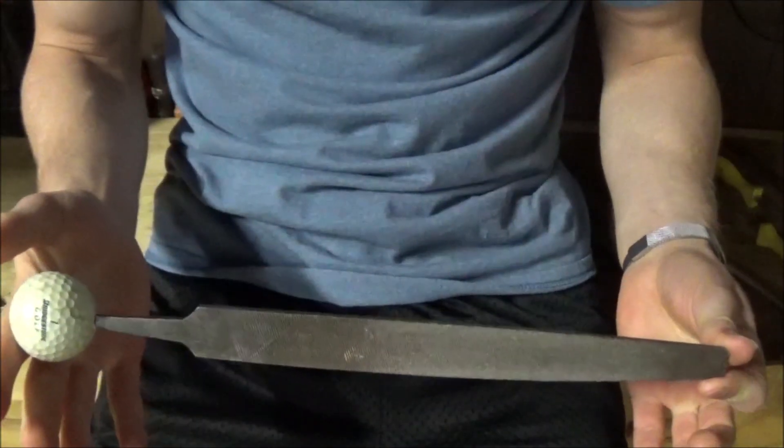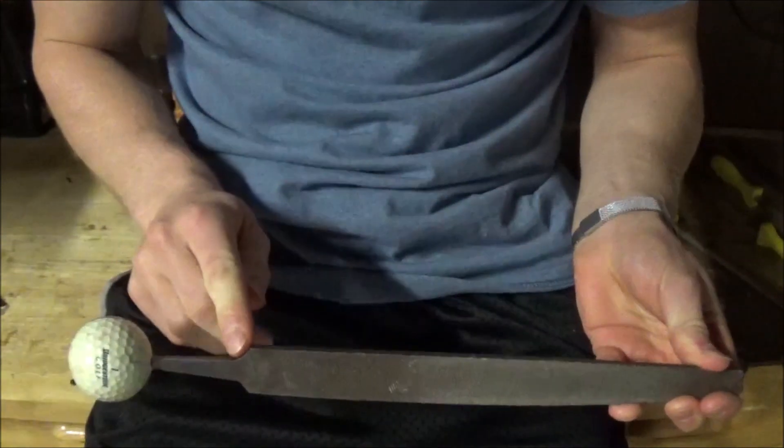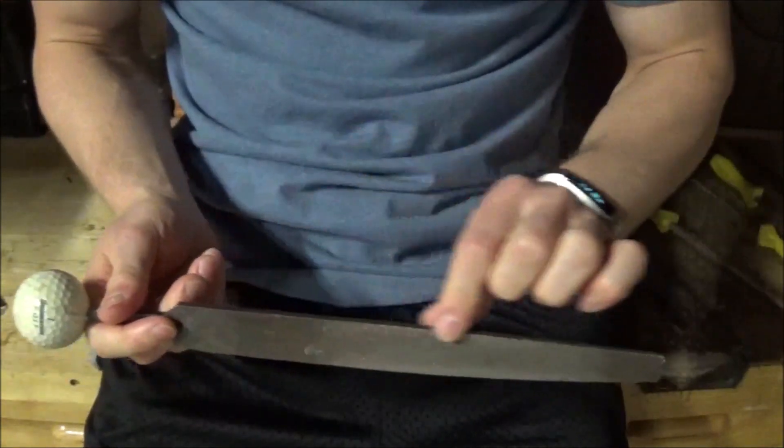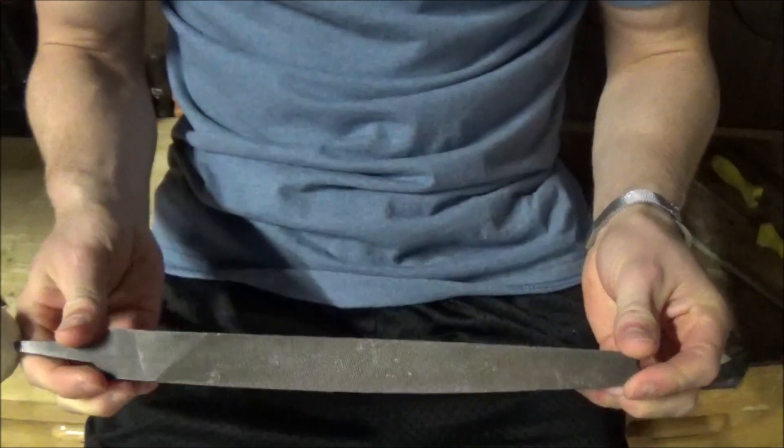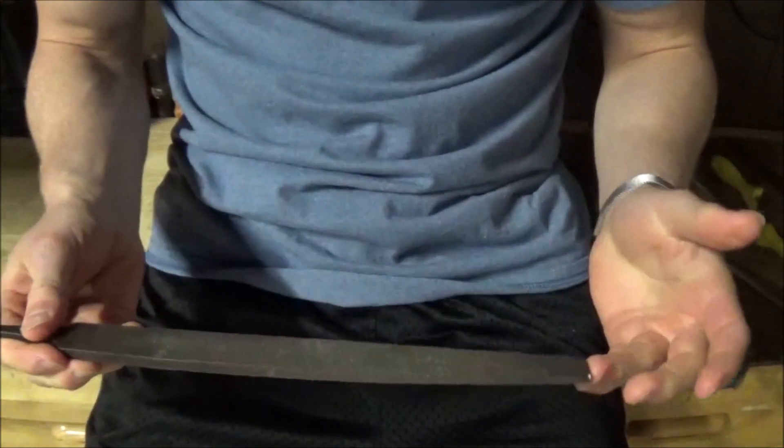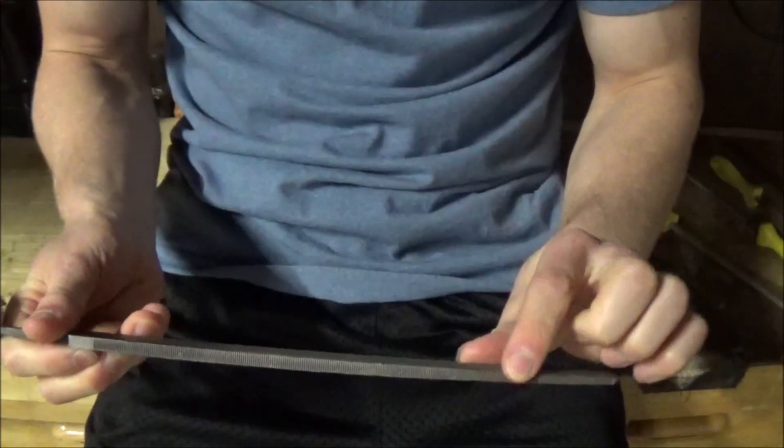There aren't a whole lot of parts to a file. You have the tang, which is this tapered part right here, and then you have the rest of the file, like the blade. Some files will have a safe face or a safe side where there are no teeth.